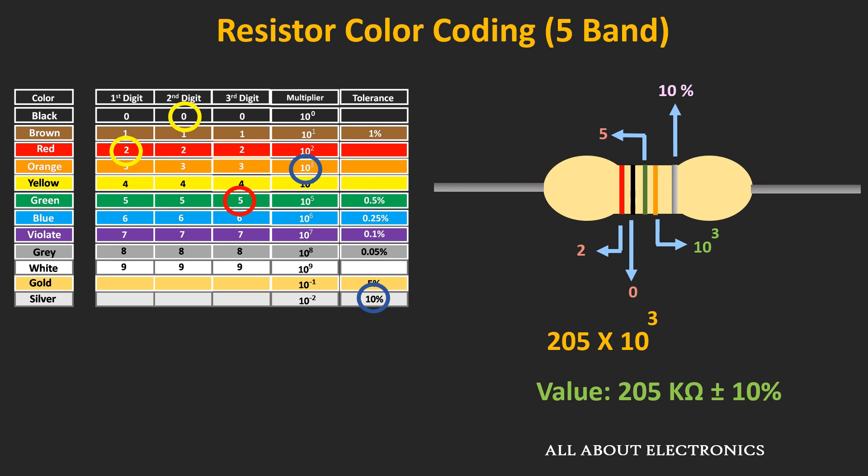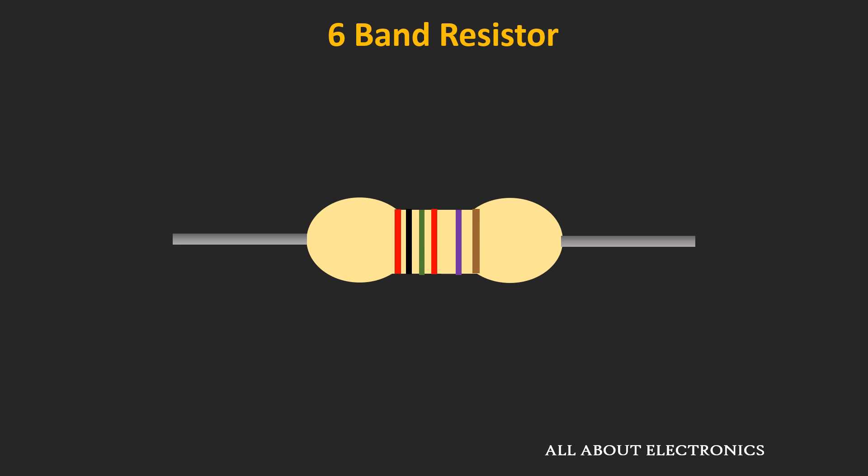Usually, 5-band resistors are used when greater accuracy is required. Similarly, let us now find out how to determine the value of a resistor with 6 color bands.